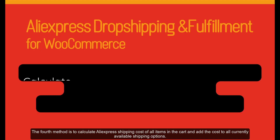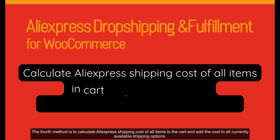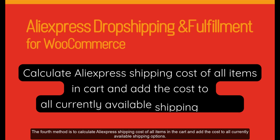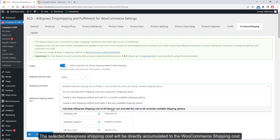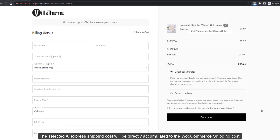The fourth method is to calculate the AliExpress shipping cost of all items in the cart and add the cost to all currently available shipping options. The selected AliExpress shipping cost will be directly accumulated to the WooCommerce shipping cost.